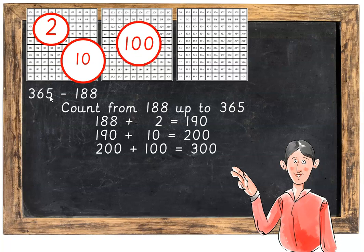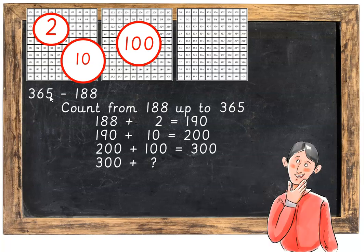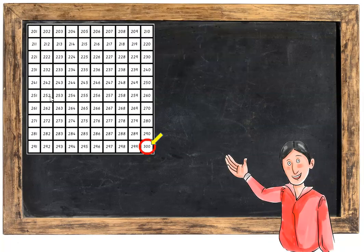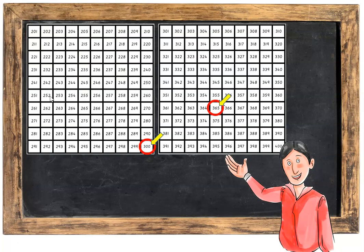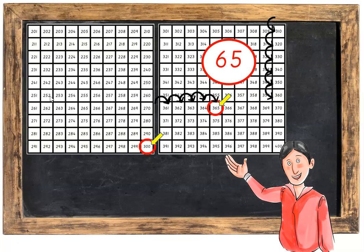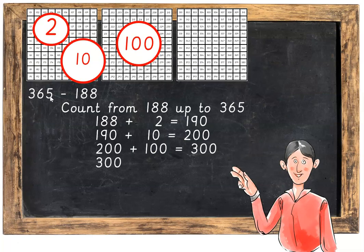We're on 300 now and all we have to do is get from 300 up to 365. Starting on 300, we have to get up to 65. That's going to be a jump of 10, 20, 30, 40, 50, 60, and then 5, which will be a total jump of 65. So 300 plus 65 is equal to 365.